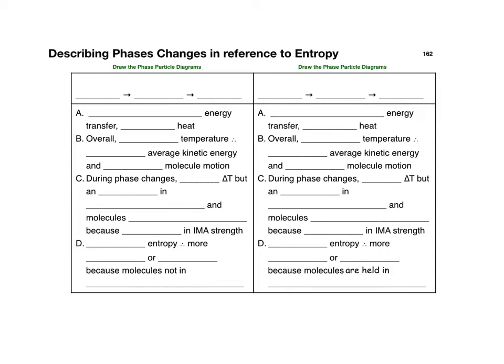Describing phase changes in reference to entropy — be able to compare and contrast the entropy of your three major phases. Besides writing the names of the phases, draw the particle diagrams. In the left-hand column, we're going to compare the entropy of a solid as it changes to a liquid and then ultimately into a gas. Phase changes in this direction require an endothermic energy transfer, meaning there is an absorption of heat.